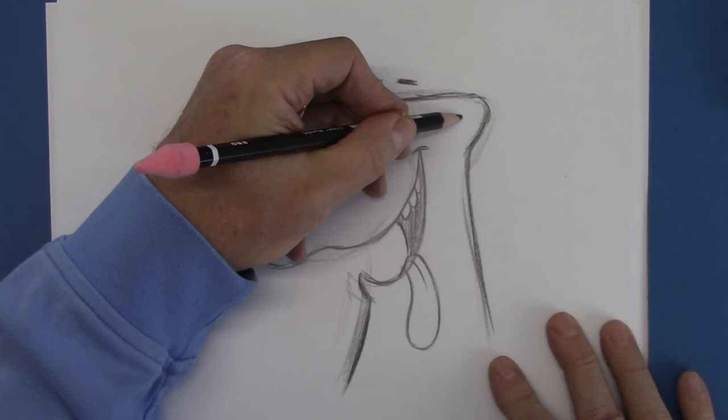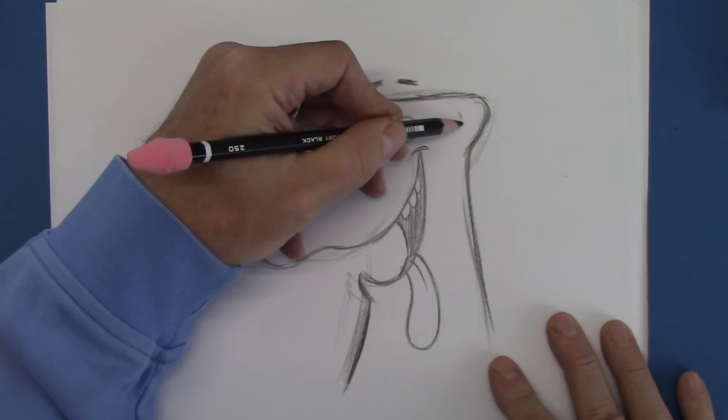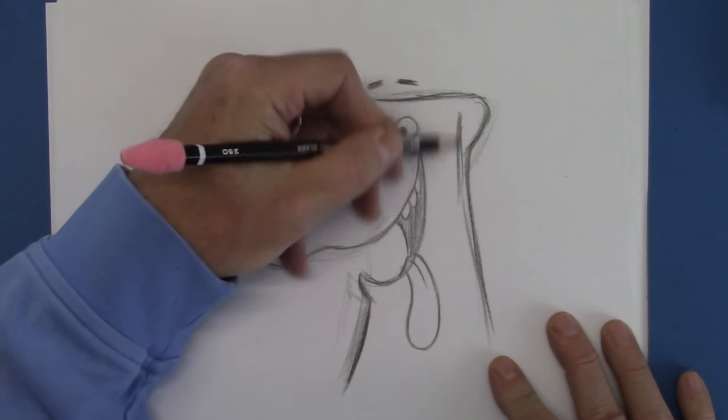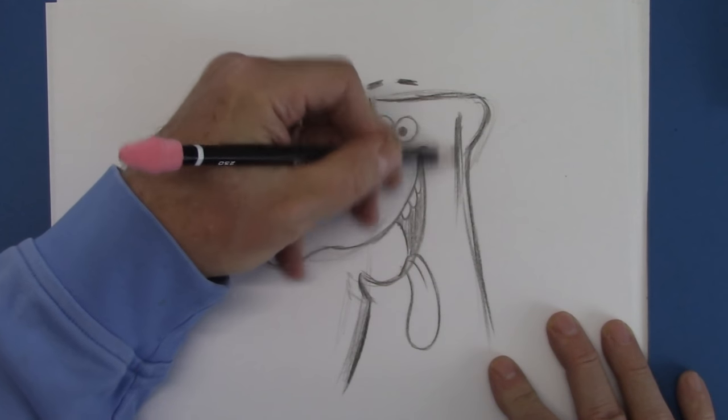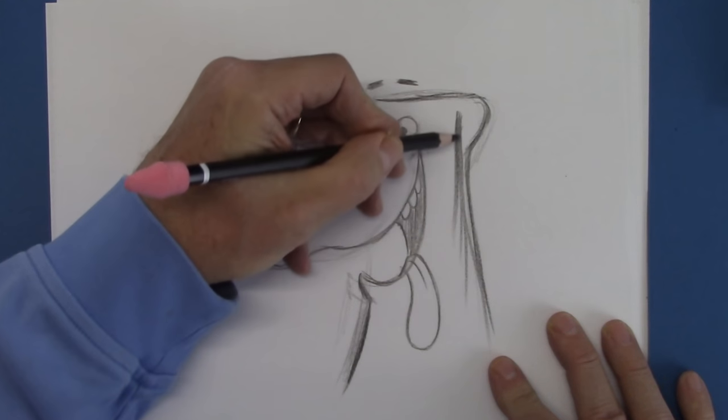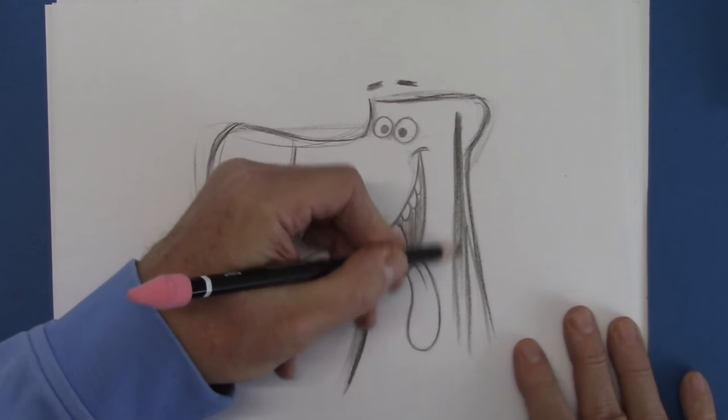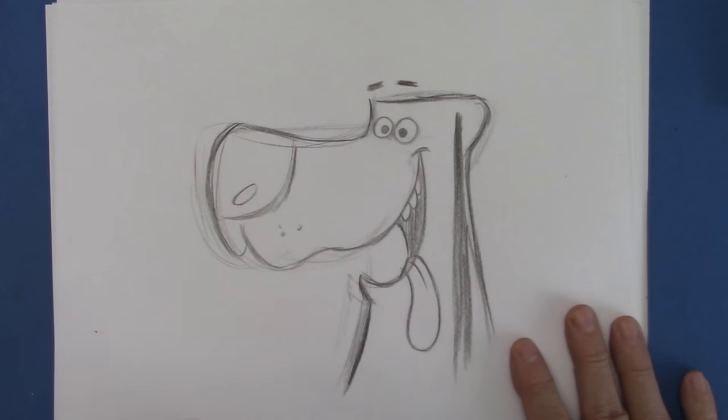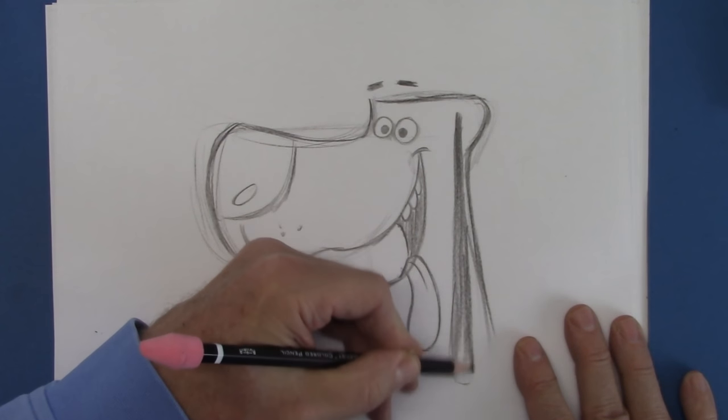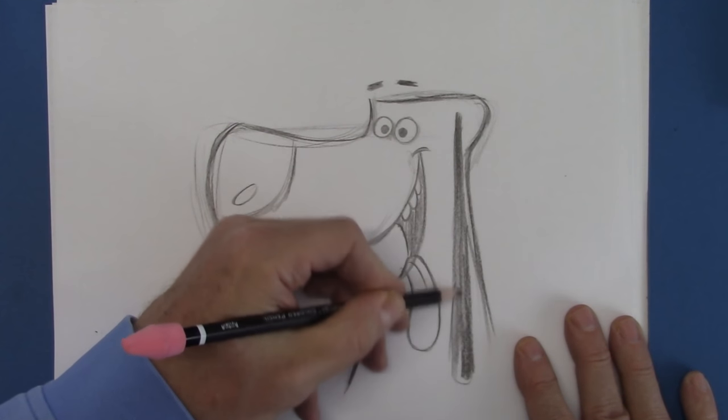All right, so now let's start with the ear up higher than the eyes. Now for a character that's really big like this, we use contrast. And I don't mean contrast in black and white. I mean he's really big, so the ear is going to be really thin, rather than a big fat ear. It just looks funny.